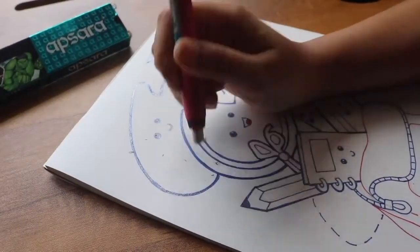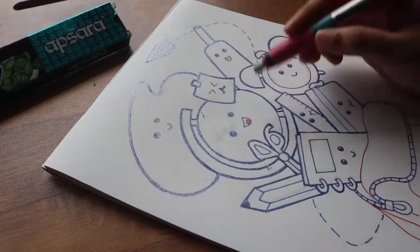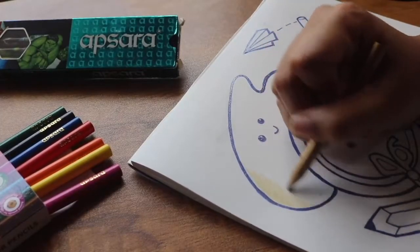Now with the help of Upsara Mecano Eraser, we'll be erasing all the extra pencil lines so that when we start coloring they won't be visible.